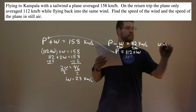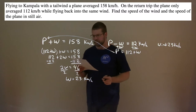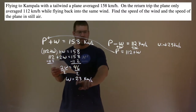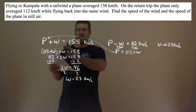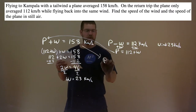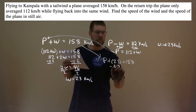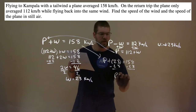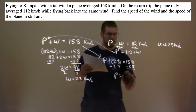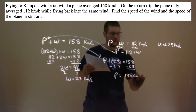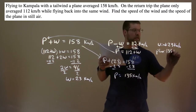Wind is 23 kilometers per hour. Now we want to find the speed of the plane. We take that 23, plug it into one of our equations. Using the first equation: P plus 23 equals 158. Subtract 23 from both sides, and P equals 158 minus 23, which comes out to be 135. So the speed of the plane is 135 kilometers per hour.